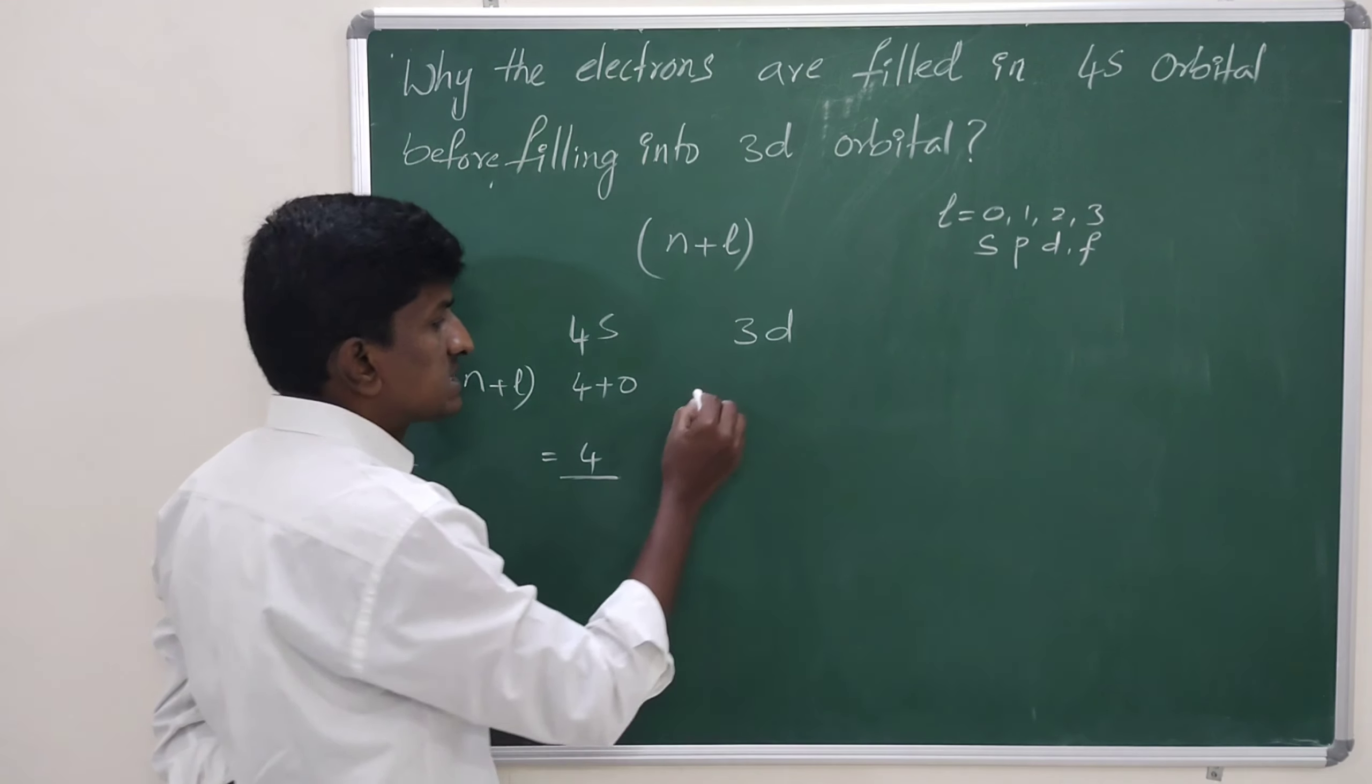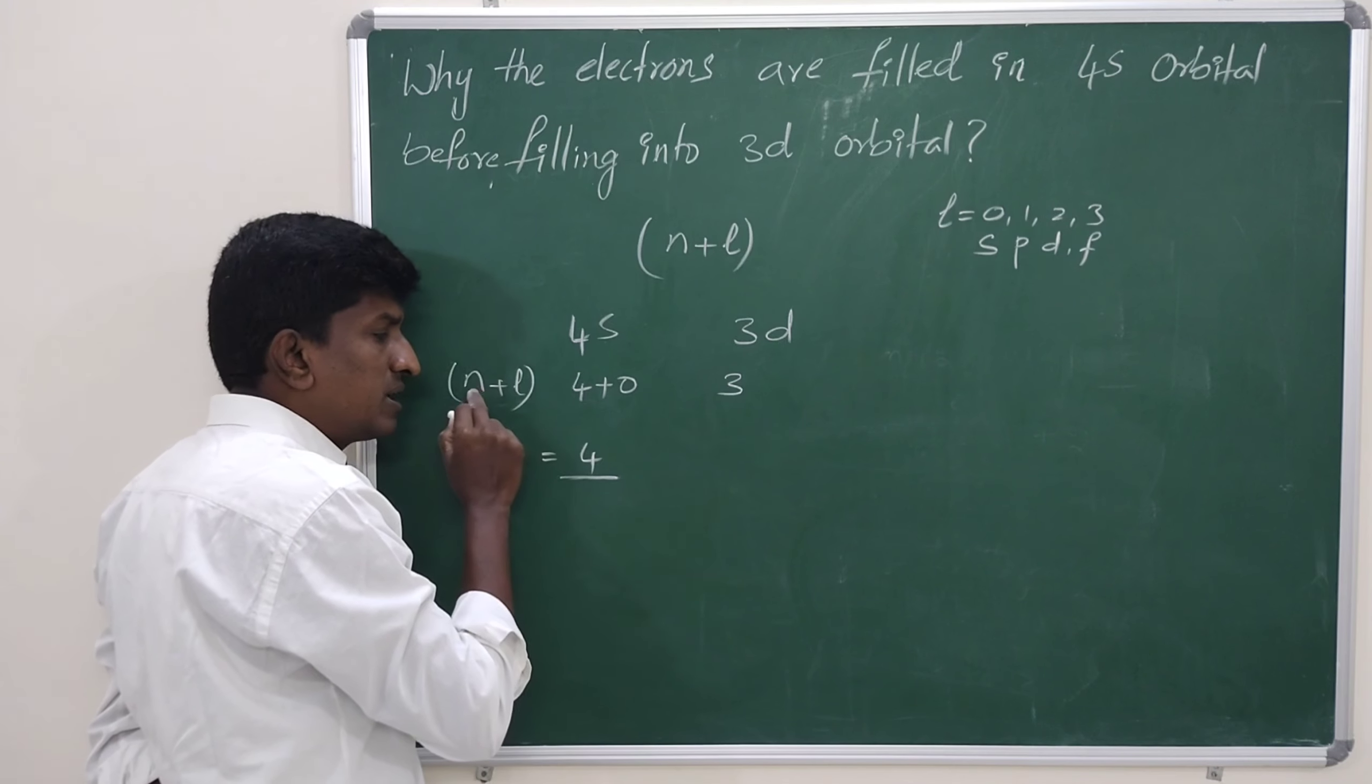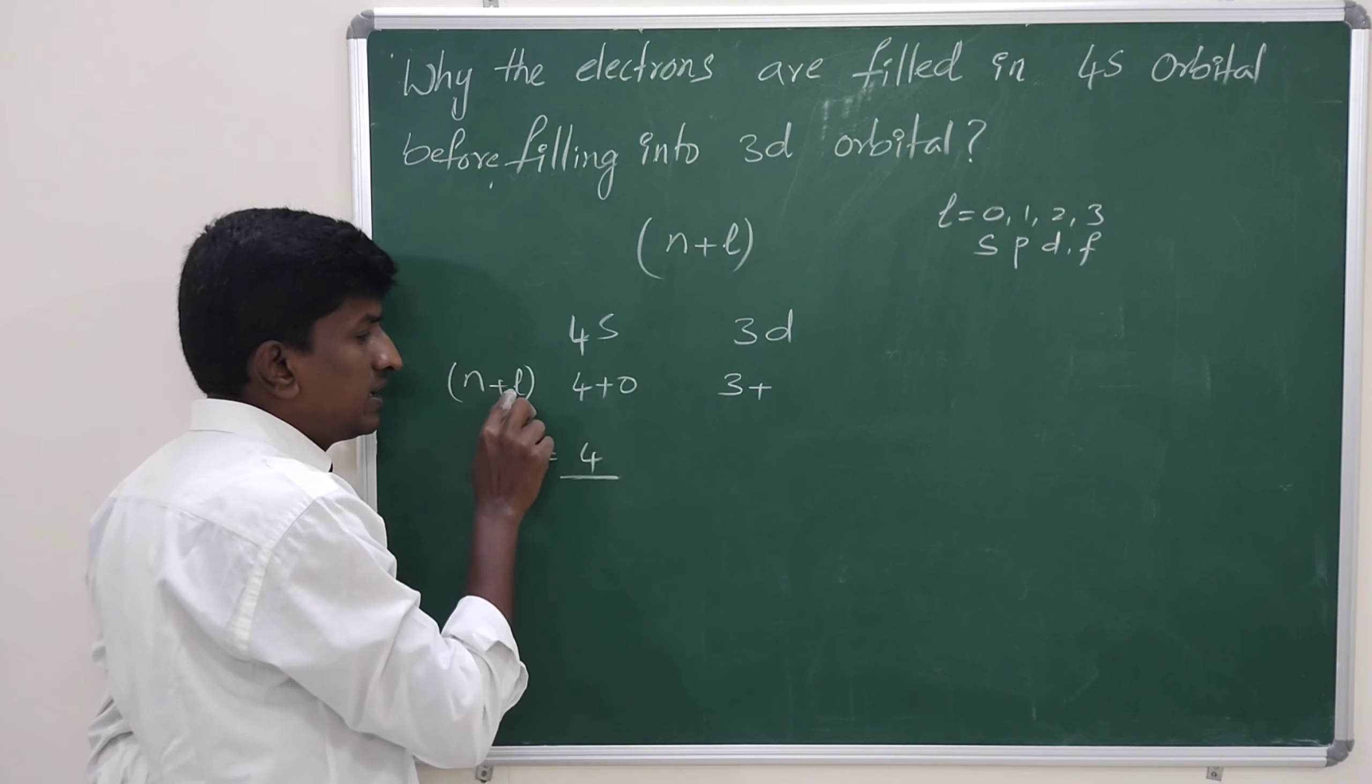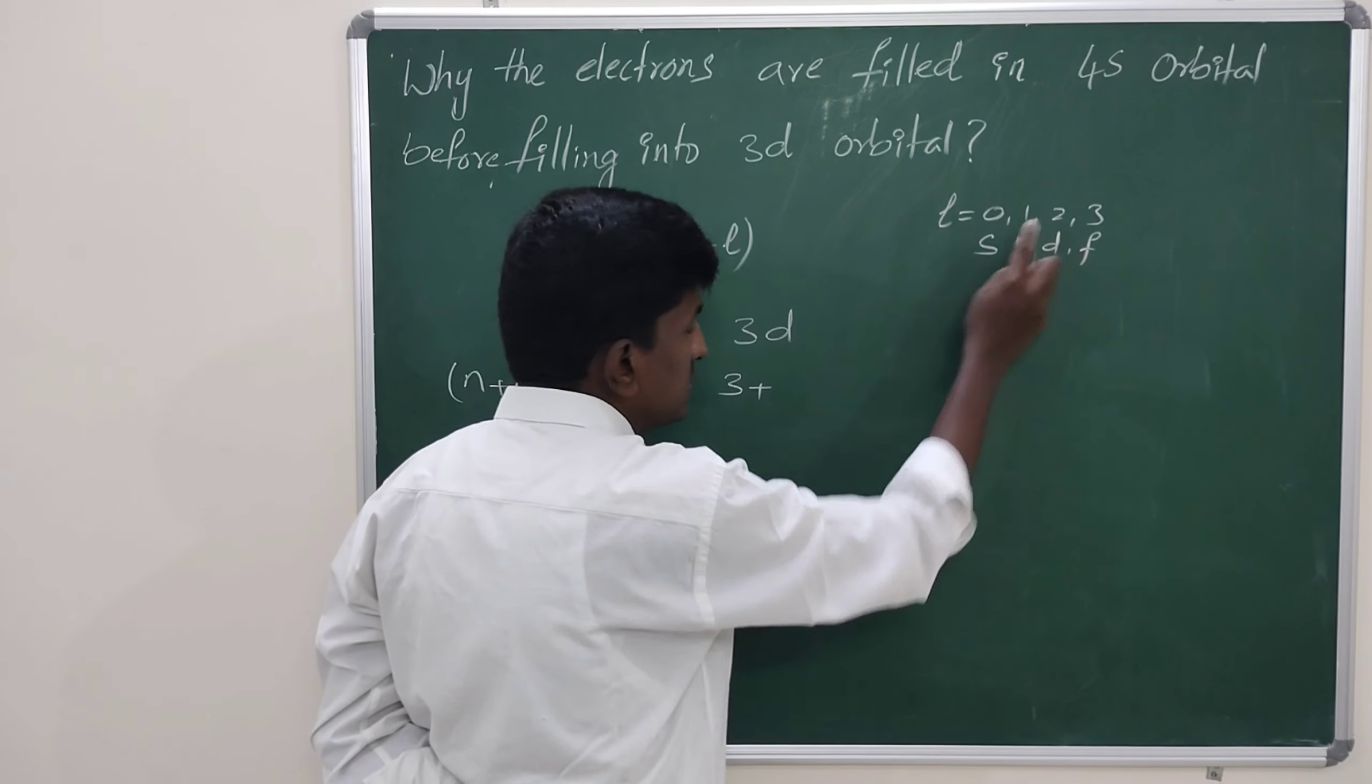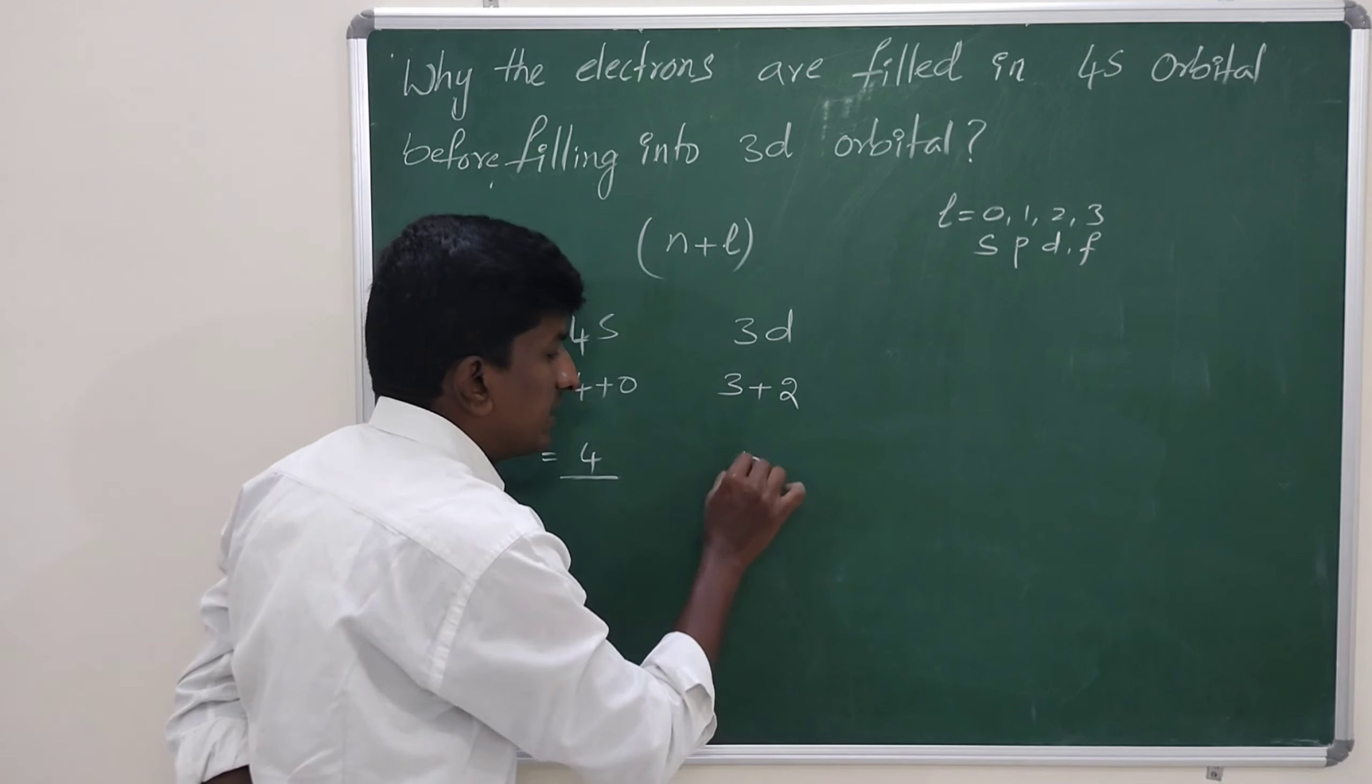Whereas, let us calculate the n plus l value of the 3d orbital. If the principal quantum number is 3, so n equals 3. Then, the l value for d is 2. So, here it is 5.